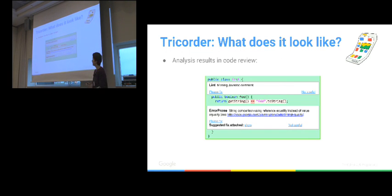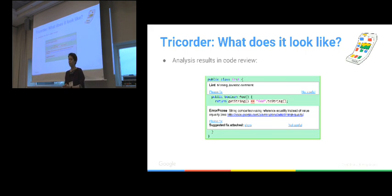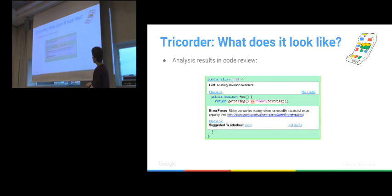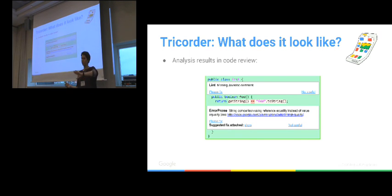The main integration point in the developer workflow is code review. Code review is central to development at Google — it's been there from the very beginning, and it's required for all changes. At least one or more people need to look at what you're changing. While you're in code review mode, you see something like a diff: the green stuff is new, the red stuff is going away.